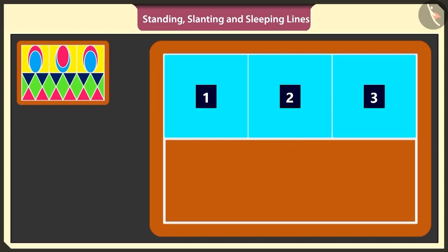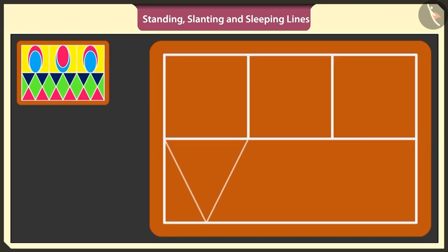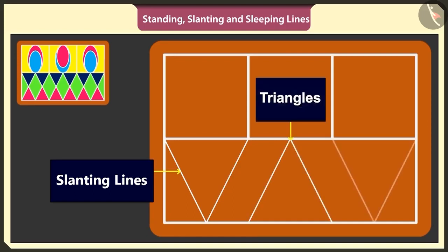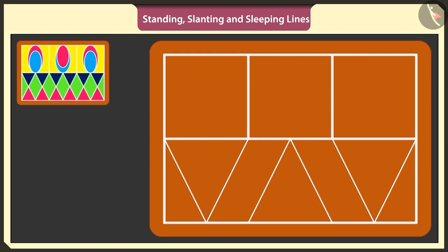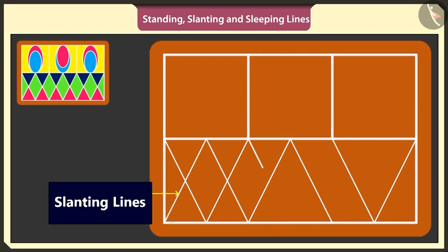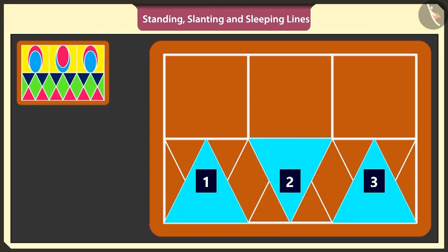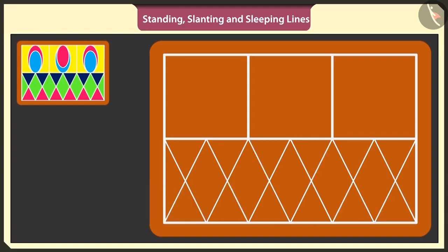Now under these three squares, I will draw three triangles, just like this. I will use slanting lines to make inverted triangles, just like this. This has become a beautiful rangoli.